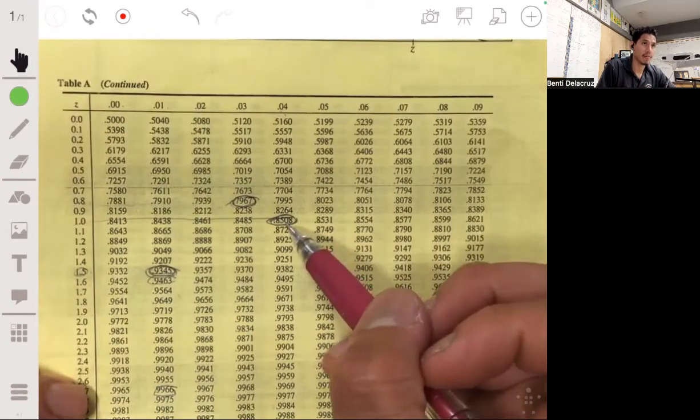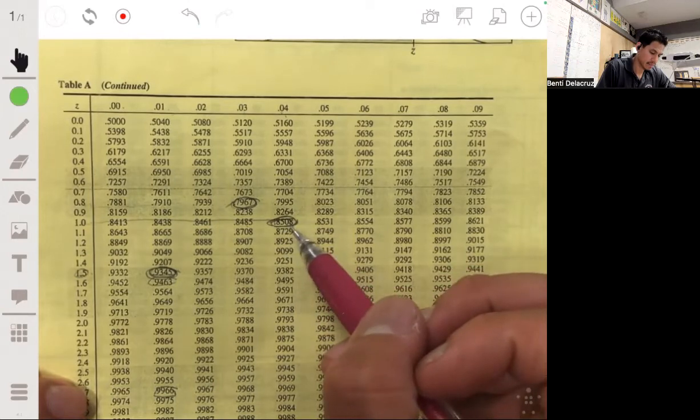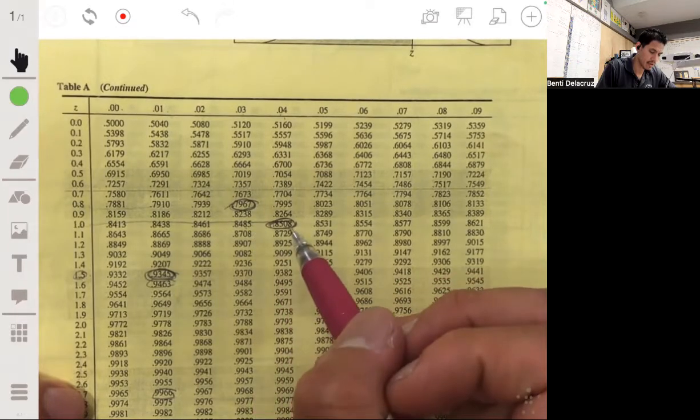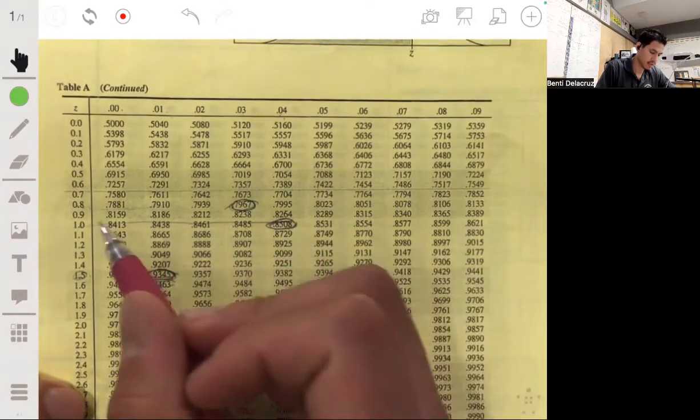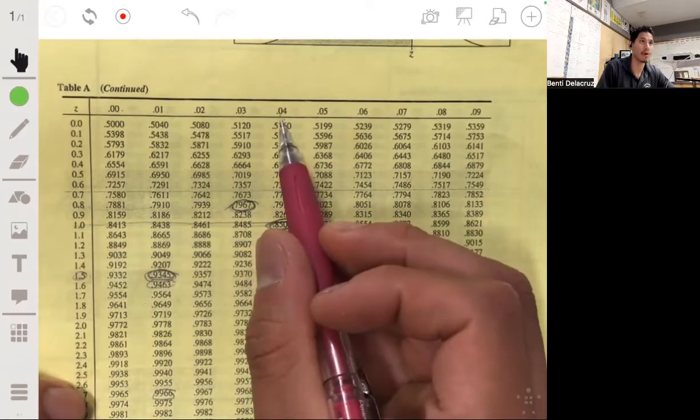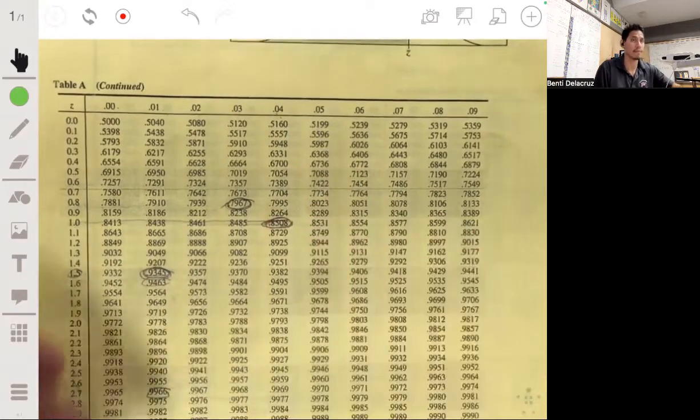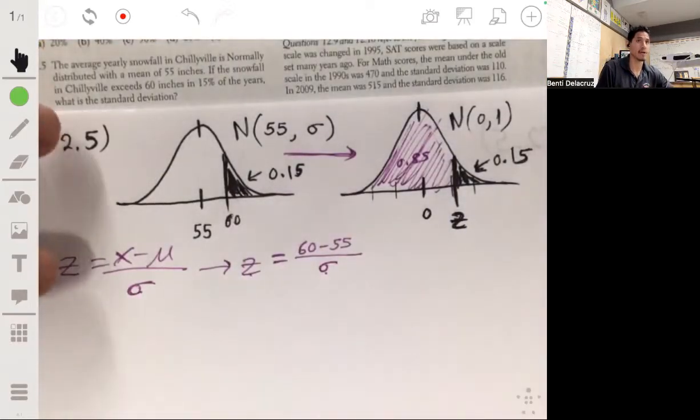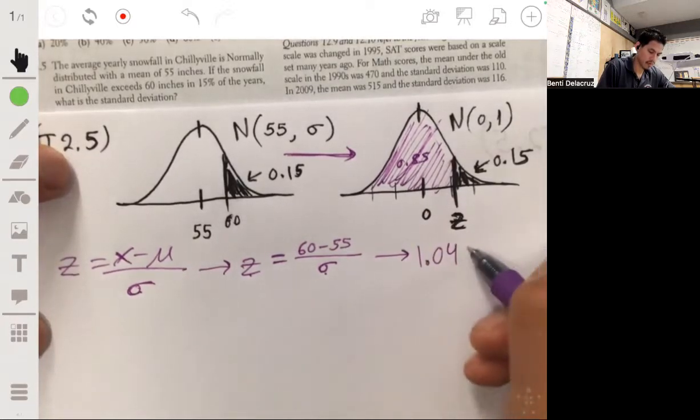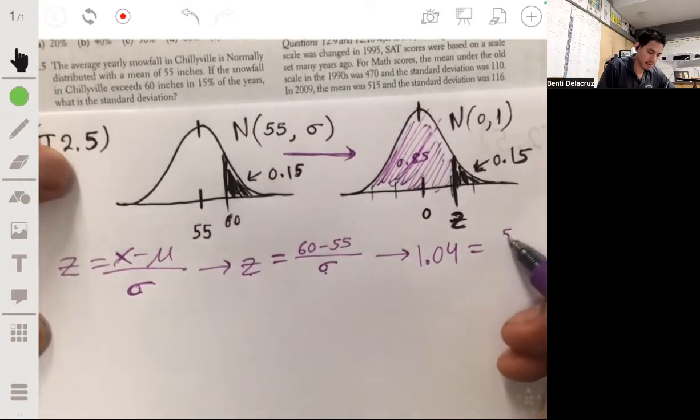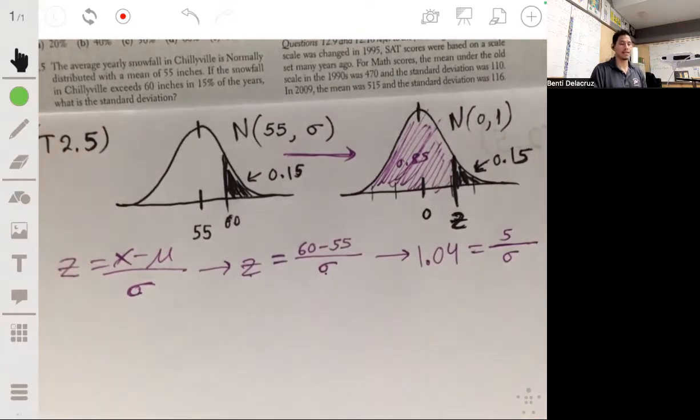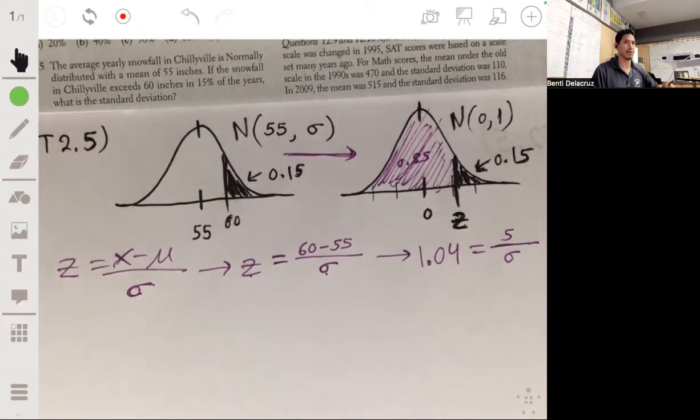And that will be right here, 0.8508. That's the closest. So the z-score that corresponds to this would be 1.04. So then this becomes the equation 1.04 equals 60 minus 55, which becomes 5 over sigma. And now it just becomes an algebraic equation. So hopefully this is the easy part.